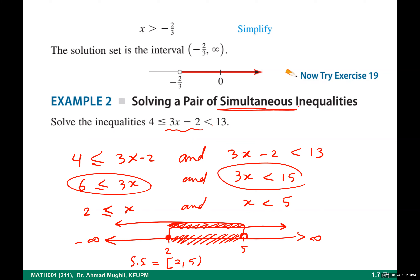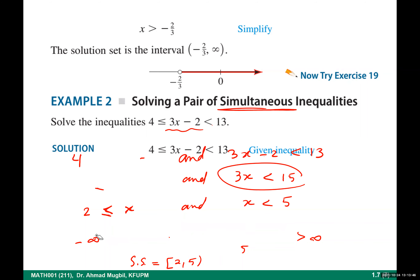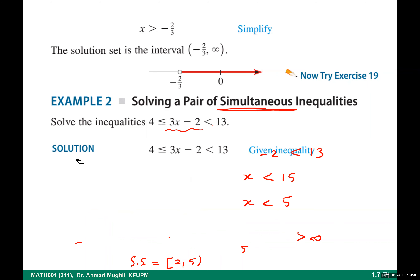What we do: my target is to isolate x in the middle. We add 2 to all sides. Then we divide all sides by 3. That's it — no need to work with two separated inequalities. Of course in some cases, when it is not linear, you may need to separate them.